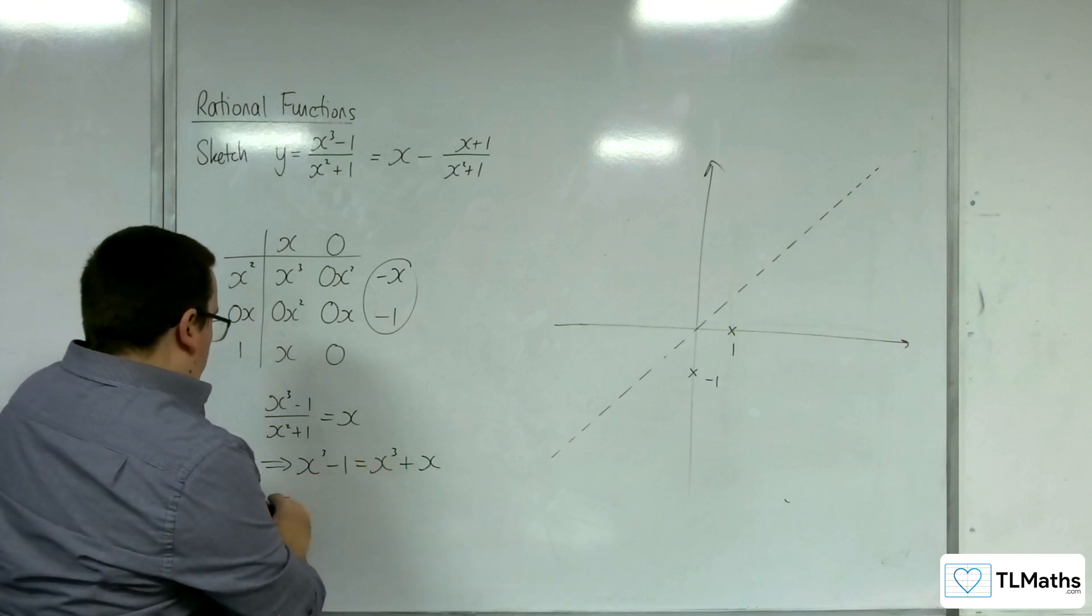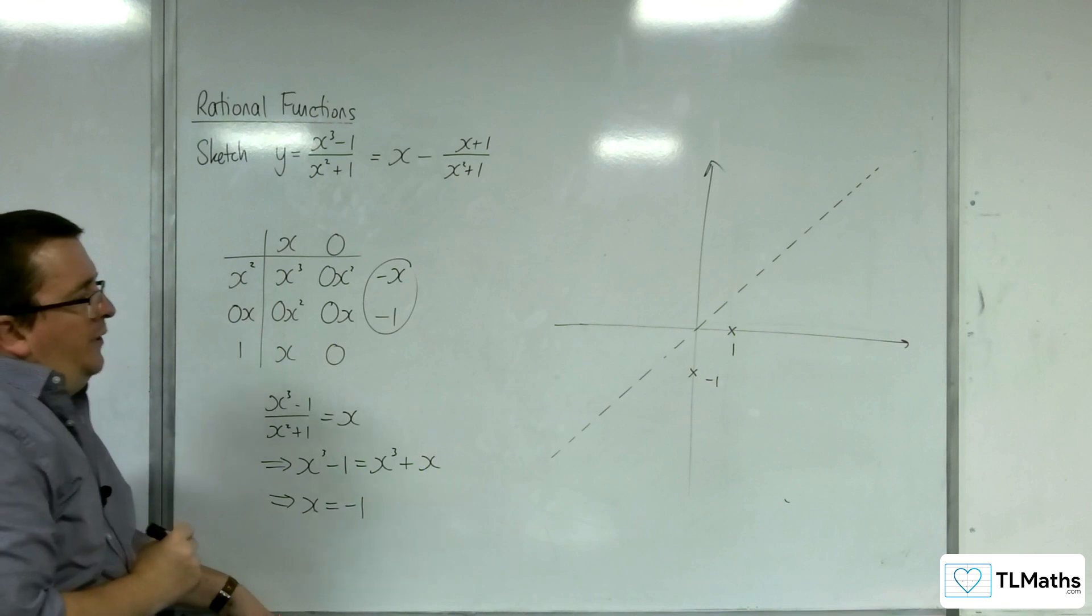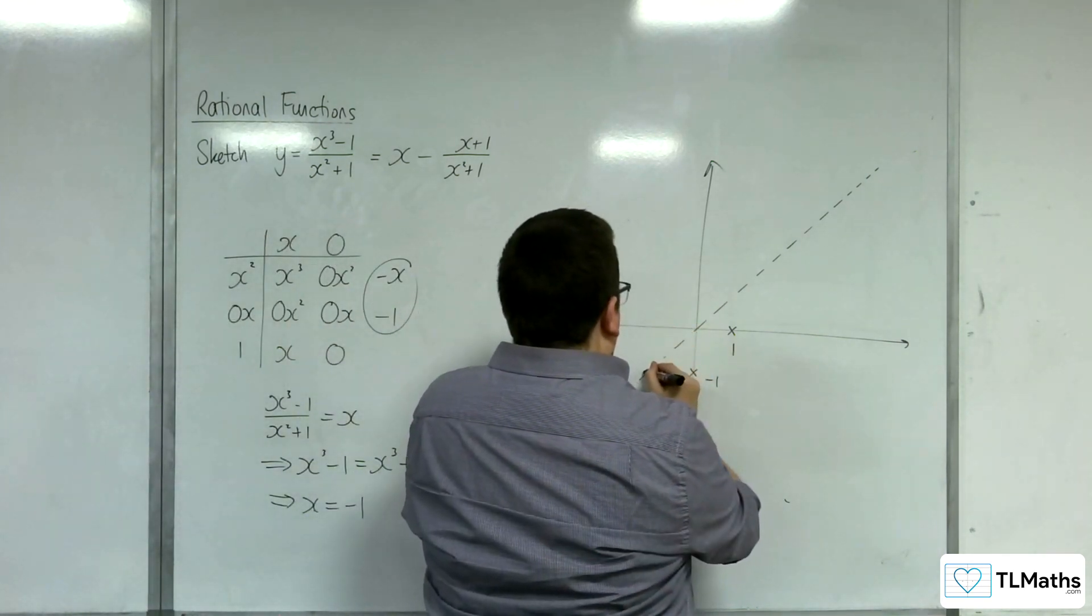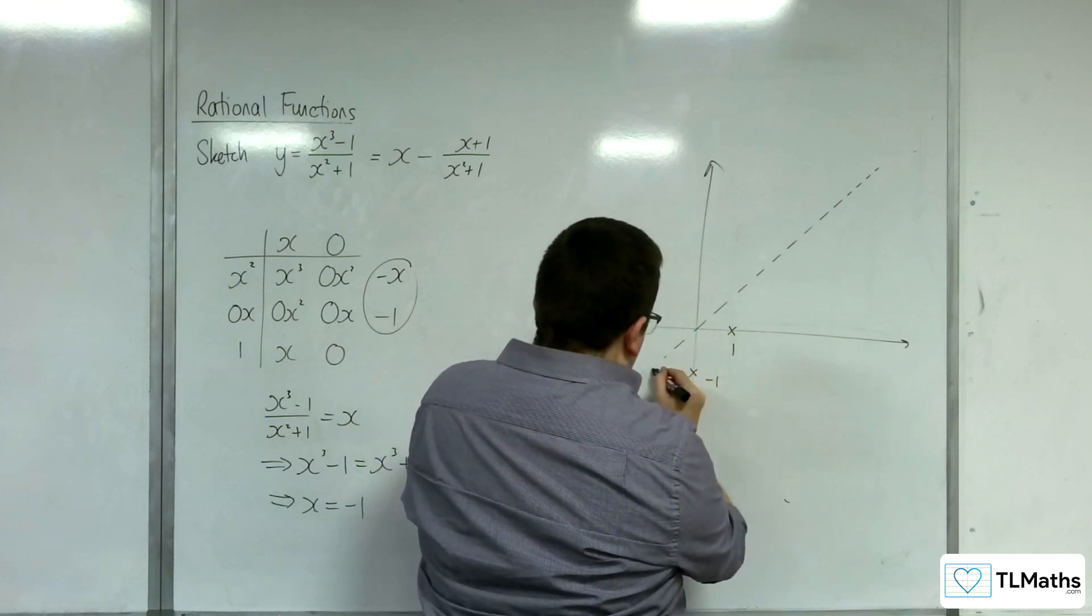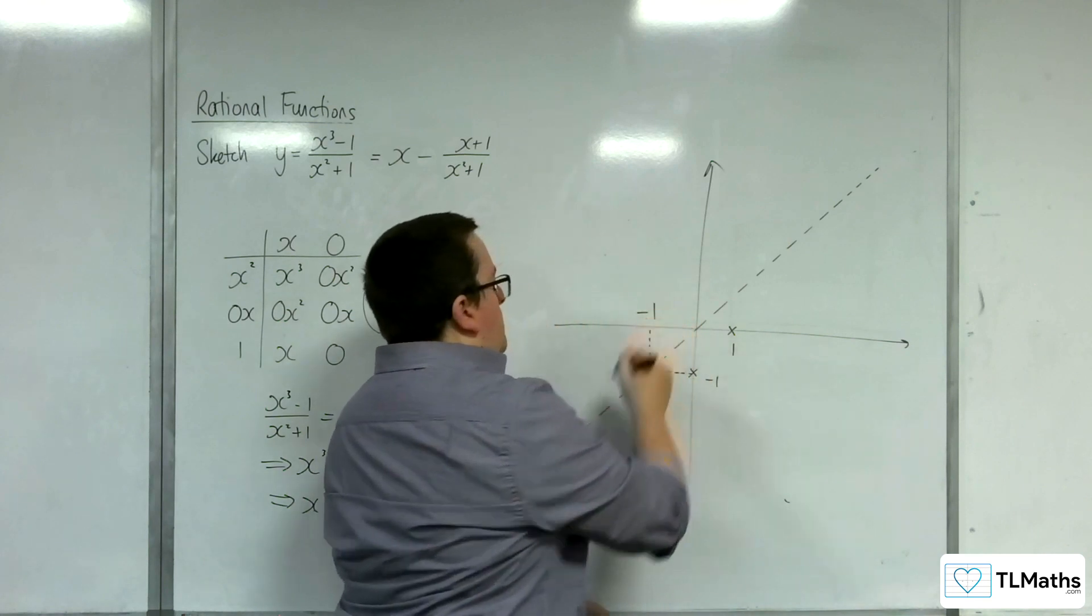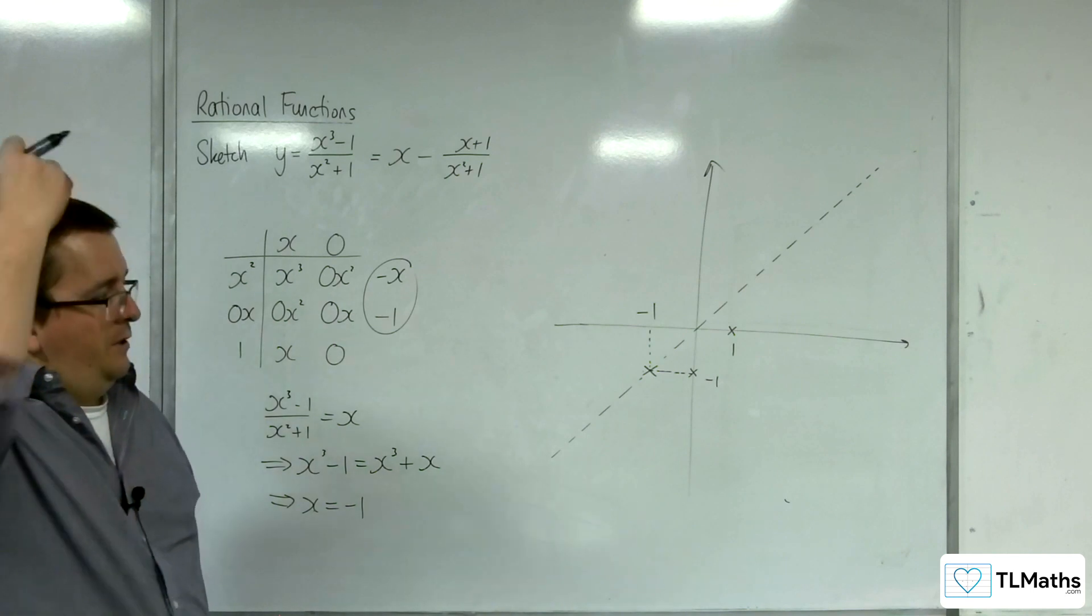So, that will leave us with x is equal to minus 1. And so, at x equals minus 1, minus 1, minus 1 must be a point of intersection with the oblique asymptote.